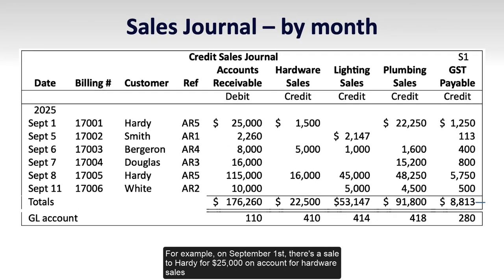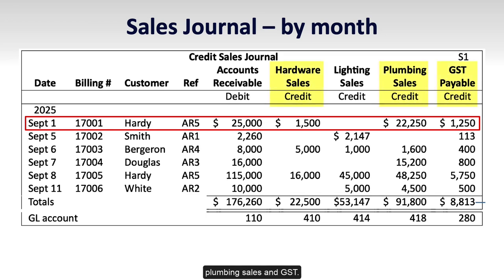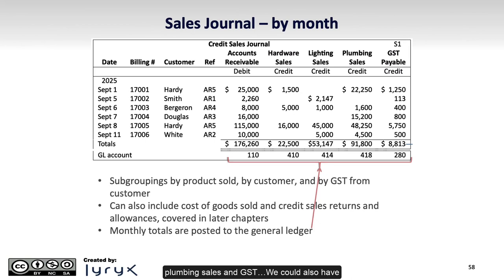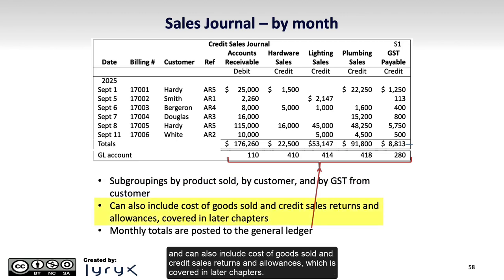Here's an example of a sales journal that shows how sales to a customer might be recorded. For example, on September 1st, there's a sale to Hardy for $25,000 on account for hardware sales, plumbing sales, and GST. We could also have subgroupings by product sold, by customer, and by GST from customer, and can also include cost of goods sold and credit sales returns and allowances, which is covered in later chapters.